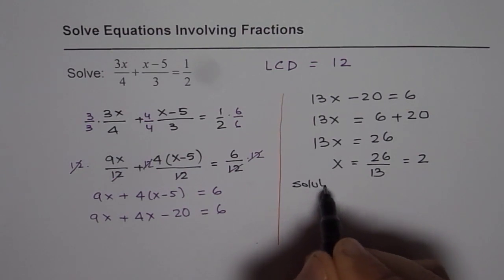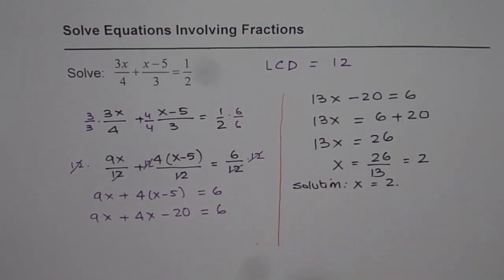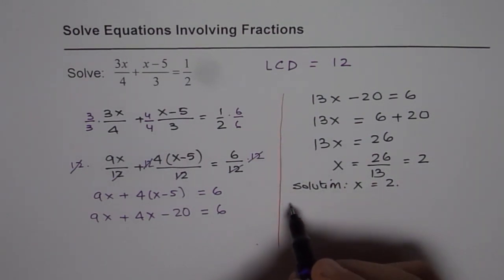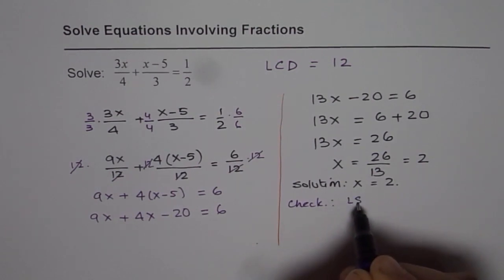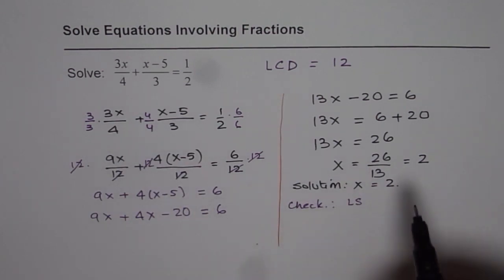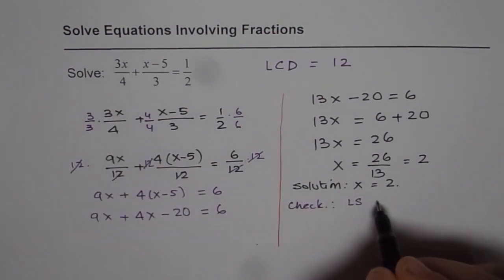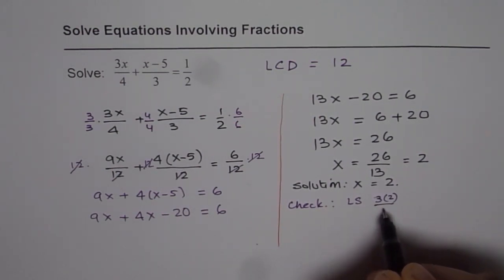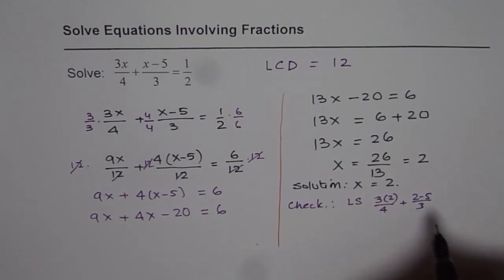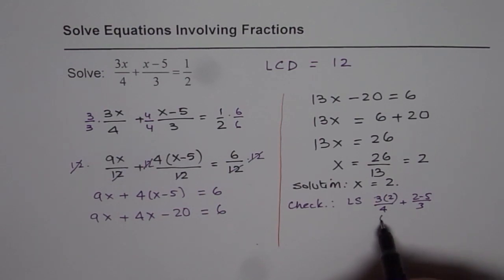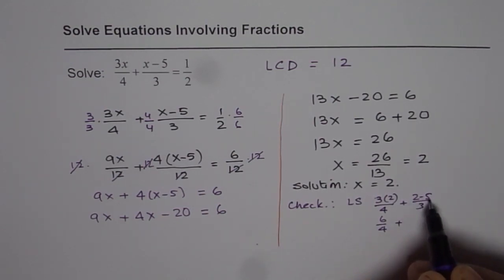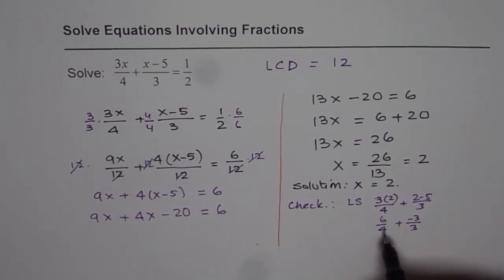So we say solution is x equals to 2. It is always a good idea to check your solution. So to check, substitute 2 in the left side. If you put 2 here then what do you get? You get 2 times 3 which is 6. So you can substitute 2 here, plus 2 minus 5 over 3 and see what you get. So you get 2 times 3 as 6, 6 over 4 plus 2 minus 5 is minus 3 over 3, which is equal to 6 over 4 is fraction 3 over 2 minus 1, which is indeed equal to half. So half is your right side, so your solution is correct.